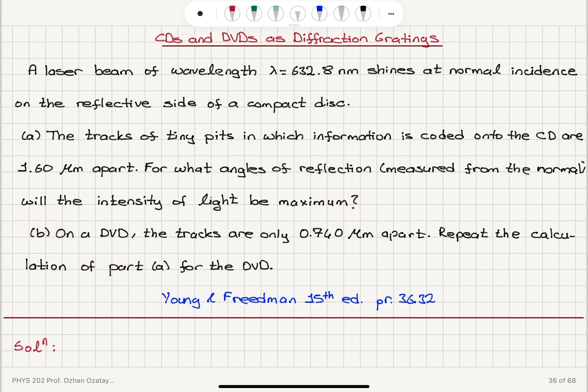Part B: on a DVD, the tracks are only 0.74 micrometers apart. Repeat the calculation of part A for the DVD.